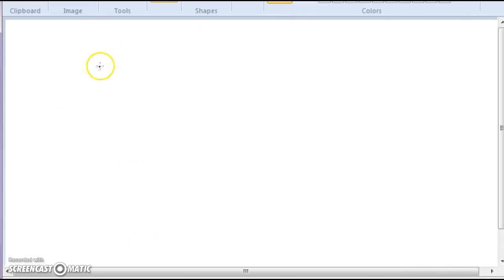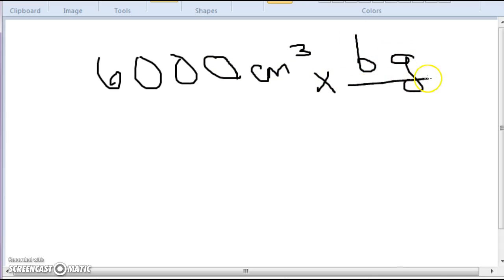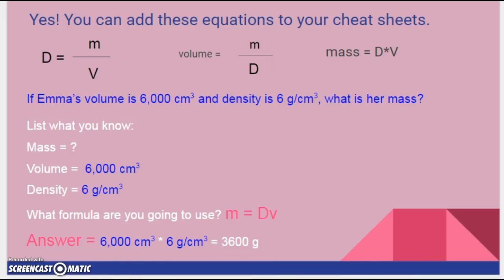So we had 6,000 cubic centimeters and we multiplied that by 6 grams per centimeter cubed. Now, technically, any number you have, you can put over 1 because that's a way to make it a fraction without changing it. And then, look, your centimeters cancel off really nice. And what unit are you left with? Grams, which is a unit for mass. So that's perfect.